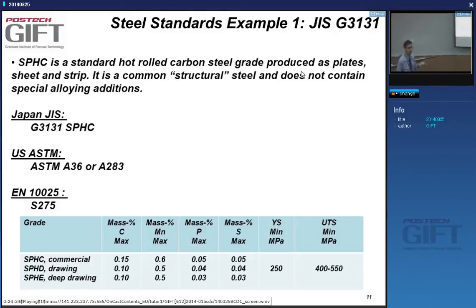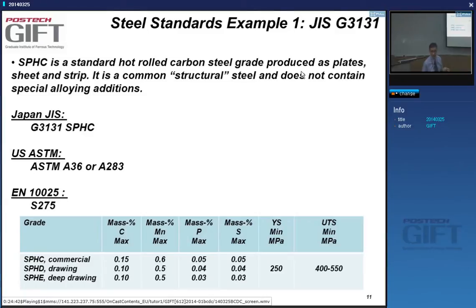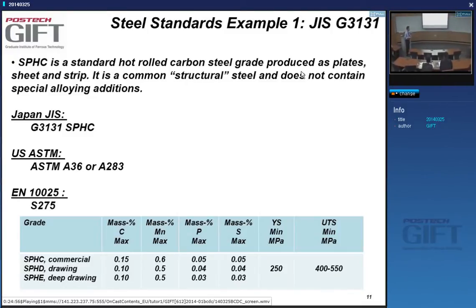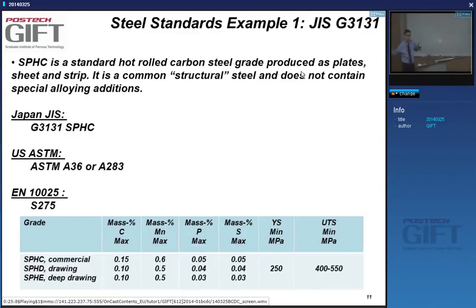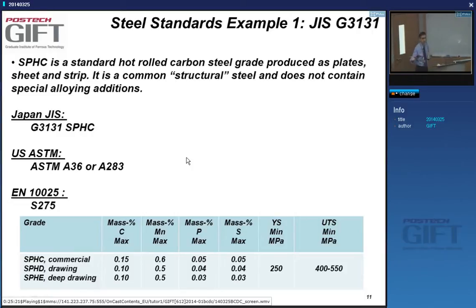The main standards people use are JIS, EN European Normalization Standards, and in the US there is much less government influence — you have professional societies like the Society for Automotive Engineers, the American Institute for Iron and Steel, and ASTM. Because America is such a big market, they have a big international impact. Korean national standards are perfectly good, but you'll probably not use them very much.